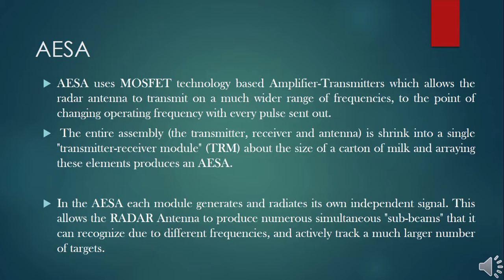The entire assembly — the transmitter, receiver, and antenna — is shrunk into a single transmitter-receiver module, called a TRM, about the size of a carton of milk. In AESA, each module generates and radiates its own independent signal. This allows the radar antenna to produce numerous simultaneous sub-beams that it can distinguish due to different frequencies, and actively track a much larger number of targets.